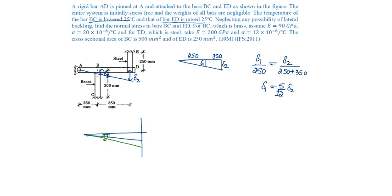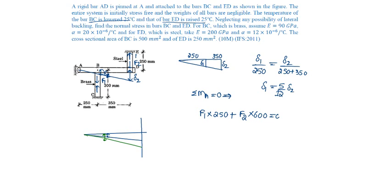Say the compressive force in this bar is F1 and the tensile force in this bar is F2. Equating moments about A to zero: F1 into 250 (anticlockwise) plus F2 into 600 equals 0, from which F1 equals minus 2.4 F2. This is one equation.